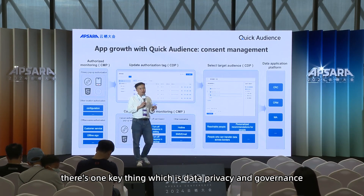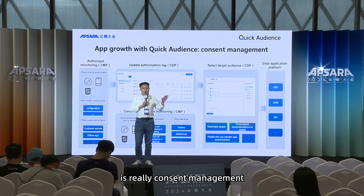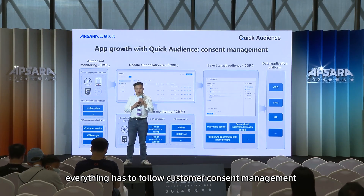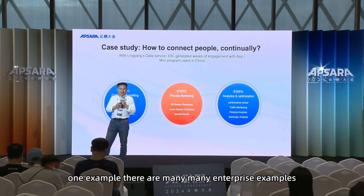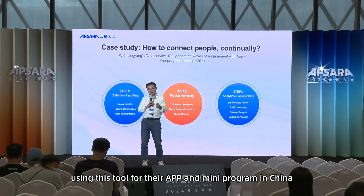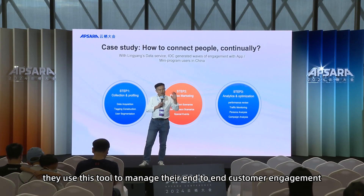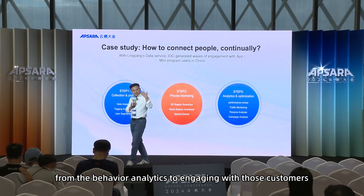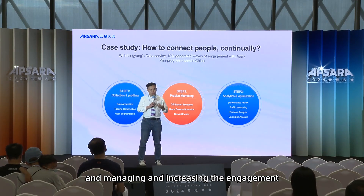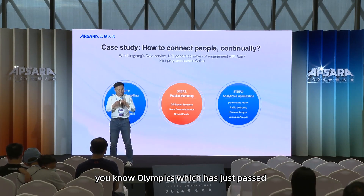For all customer operations, data privacy and governance is key. That's why an important feature of Quick Audience is consent management — ensuring that from behavior tracking to customer touching and operations, everything follows customer consent. One example is the International Olympics Committee, who used this tool for their many apps in China. They managed end-to-end customer engagement, from behavior analytics to engaging customers in a personalized way, pushing the right content at the right time for their tens of millions of Olympics audience in China.